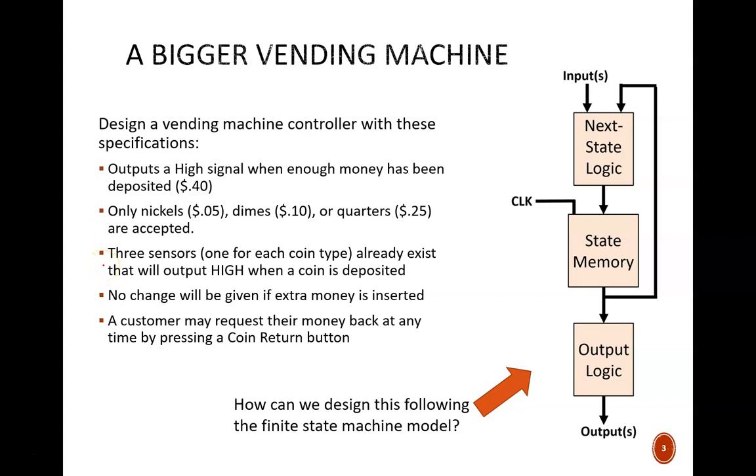Three, we'll assume that three sensors already exist that will output high when a coin is deposited. So, for example, when a dime is deposited, the dime signal jumps high. Four, no change will be given or stored in memory if extra money is inserted, but we might adjust that in a later model. And five, a customer may request their money back at any time by pressing a coin return button.